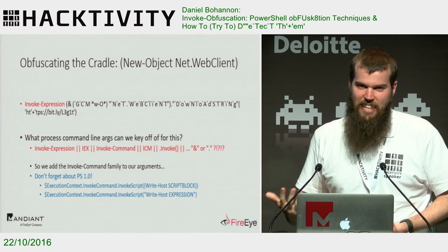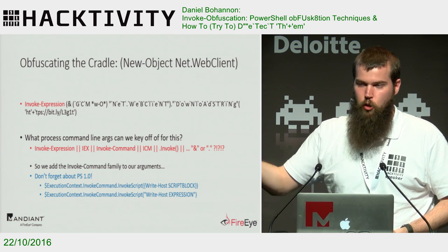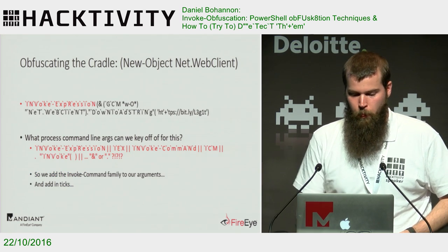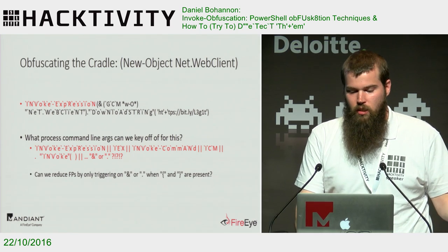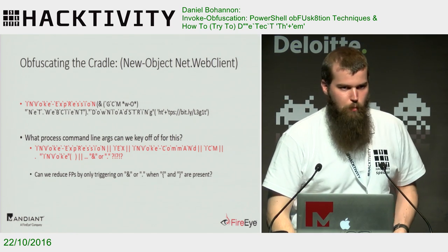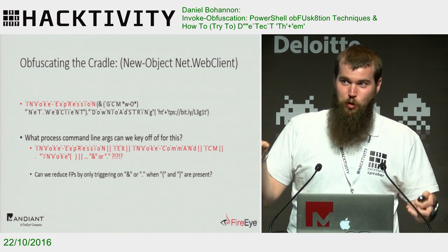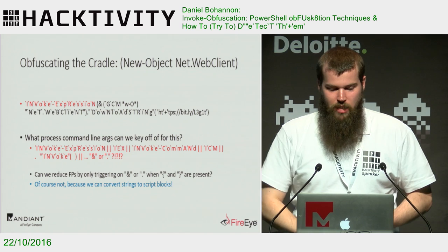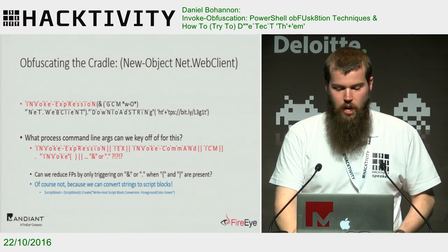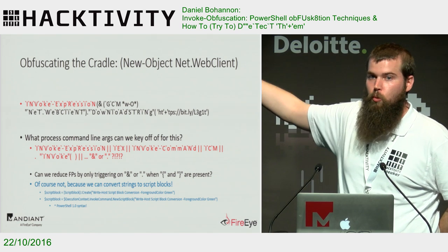If we know it's associated with a script block, we can try to pair that with curly braces — but as we'll see, that's not always the case. With PowerShell 1.0, there's this syntax: Invoke-Command, Invoke-Script, which will actually work on an expression or a script block — something else to look for. We can add ticks to any of these. If we're trying to reduce false positives for the ampersand or dot by looking for braces — which is typically what you'd see denoting a script block — that's not necessarily the case. We can convert expressions or strings to script blocks using .NET syntax or PowerShell 1.0 syntax.